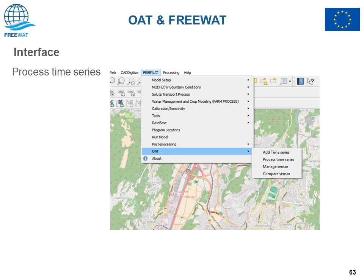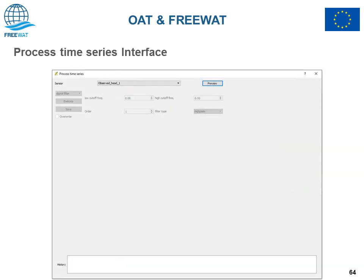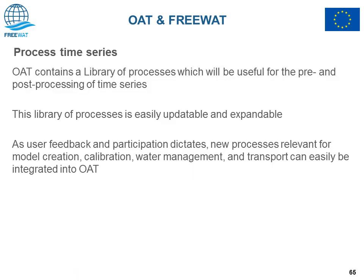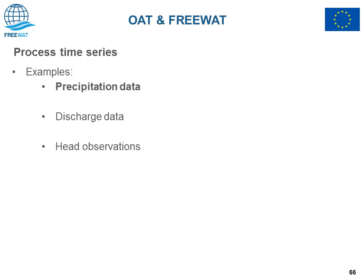Under the Process Time Series menu, we can access OAT's capabilities to process time series. The process time series component applies the method class to the sensor class. The method class is highly updatable and expandable, so in the future you will likely see new functions and processing capabilities. In this tutorial you will see three examples: one related to precipitation data, one related to discharge data, and one related to head observations.